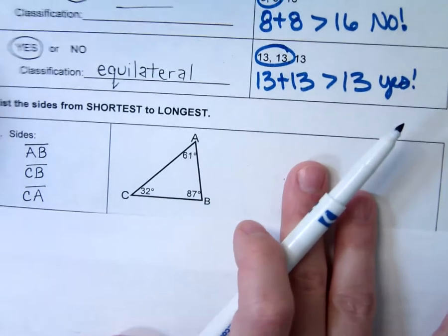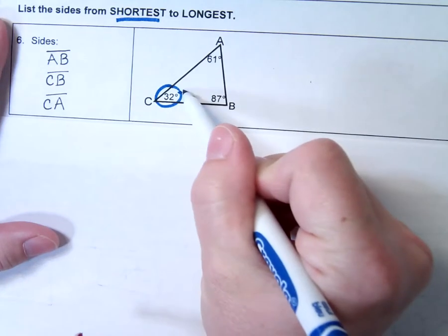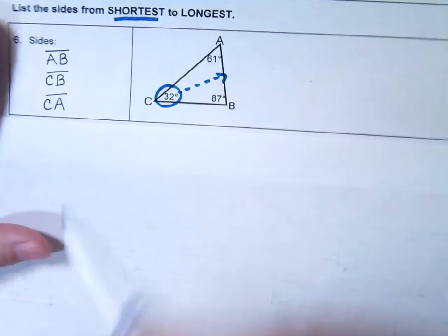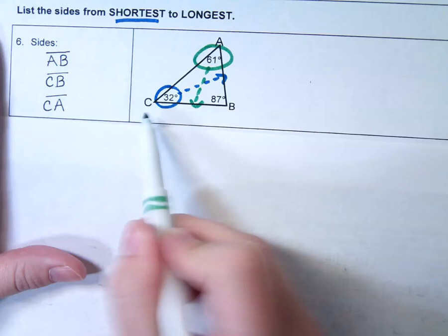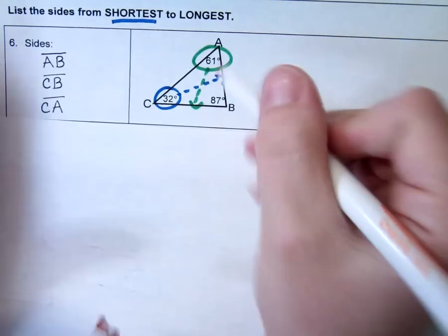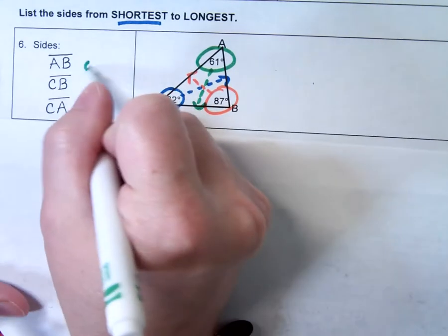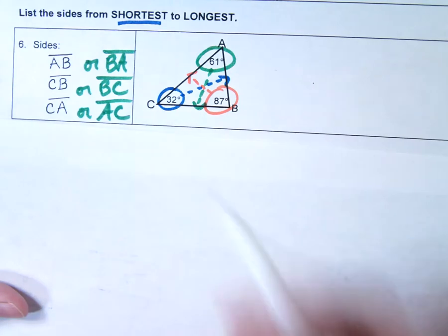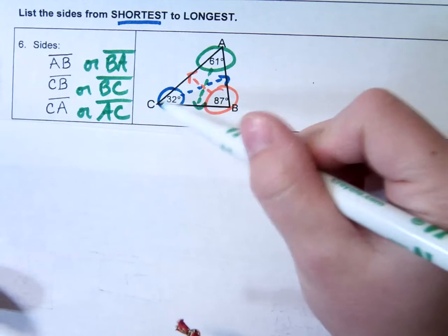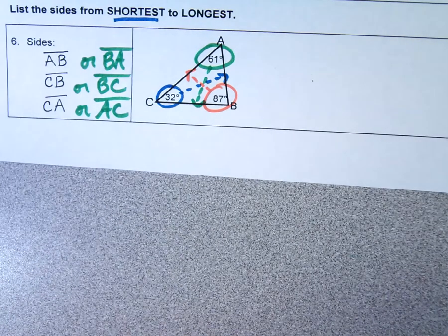Here we want to name the sides from shortest to longest. Remember, the shortest side is across from the smallest angle. My smallest angle gives me side AB — that's my shortest side. My next smallest angle is 61, and the side across from it is side BC. My biggest angle, 87, the longest side is all the way across from it, which is side AC. The letters could be switched — segment BA, BC, AC all mean the same thing.